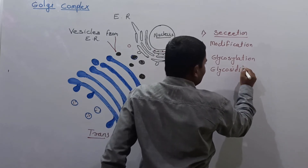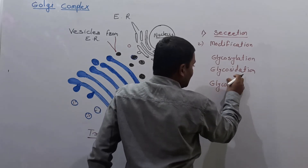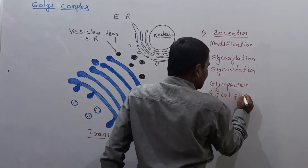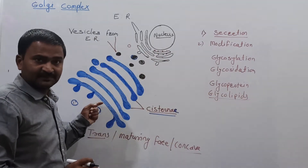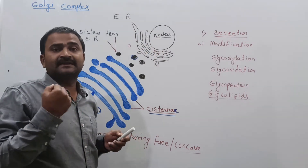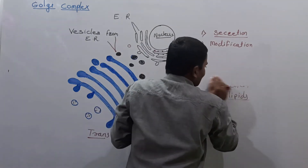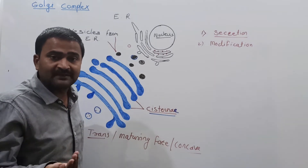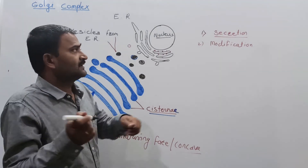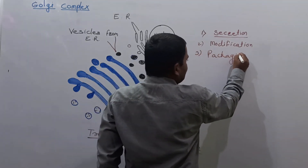Through the process of glycosylation, carbohydrates are added to proteins and lipids, forming glycoproteins and glycolipids. The Golgi complex is responsible for the modification of secretory substances by glycosylation, and then the packaging of these secretory substances.